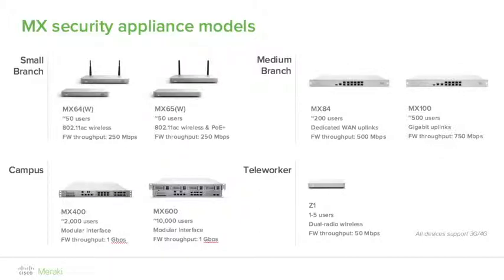For the medium branch, we have the MX84 and MX100. The MX84 has 10 copper giga interfaces and two SFP ports. Firewall throughput is 500 megabits per second and VPN throughput is 250. The device is recommended for networks of up to 200 users. The MX100 has nine copper giga ports and two SFP ports, with firewall throughput of 750 megabits per second and VPN throughput of 500 megabits per second. Select this device for networks of up to 500 users.